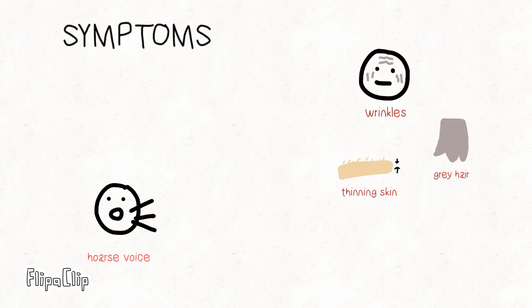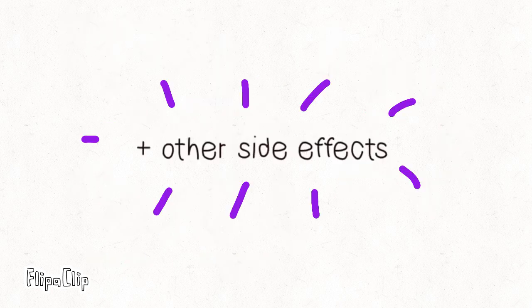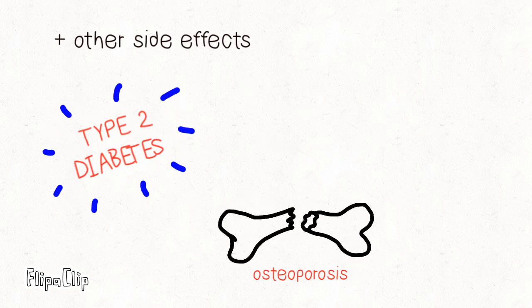This is why symptoms of Werner syndrome include wrinkles, thinning skin, gray hair, hoarse voice, and atrophy, as well as other side effects like type 2 diabetes, osteoporosis, and heart failure.